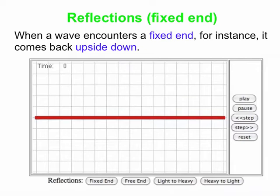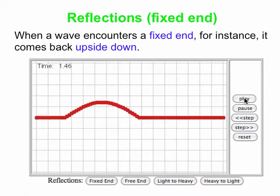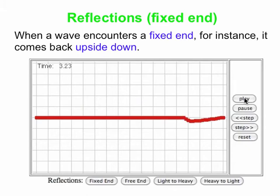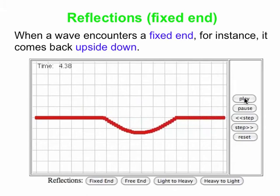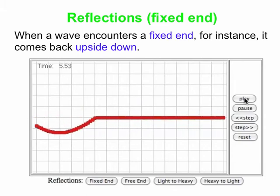We're going to send the pulse down the string, and we're making sure that the right end of the string cannot move. And you see that when the pulse comes back, it's upside down. So: fixed end, upside down.